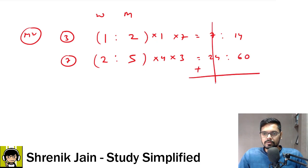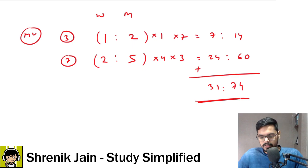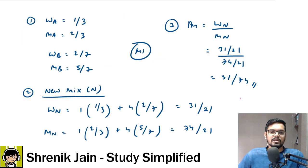Now you just add the values vertically. You will get your final answer. So 7 plus 24 that is 31. 14 plus 60 that is 74. This is how the trick works. 31:74 can be gotten from this method as well.